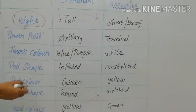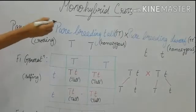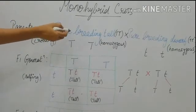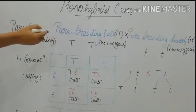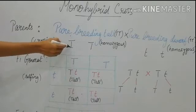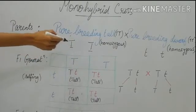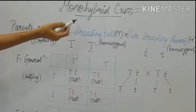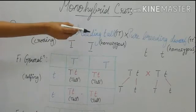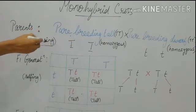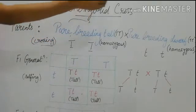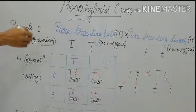First we can see about monohybrid cross. In monohybrid cross, the homozygous tall parent was crossed with homozygous dwarf. The gametes produced by the tall parent have the dominant allele capital T capital T, and the gametes produced by the dwarf parent have the recessive allele small t small t. When crossing these two parents — crossing means the pollen grains of the tall plant are transferred to the dwarf plant — we get the F1 generation.